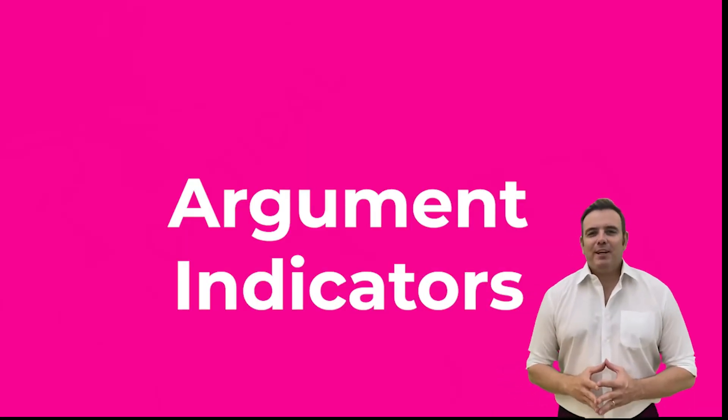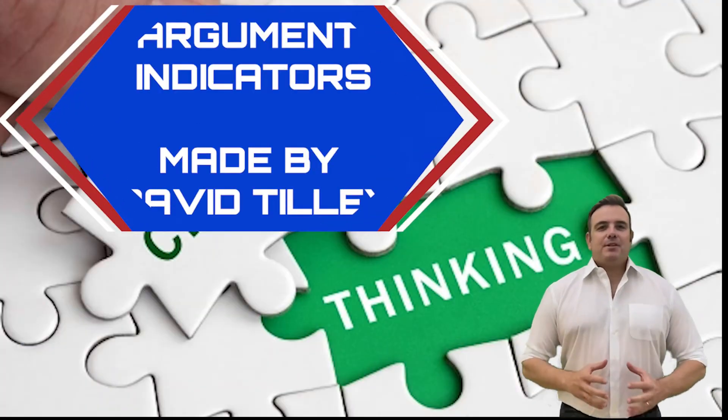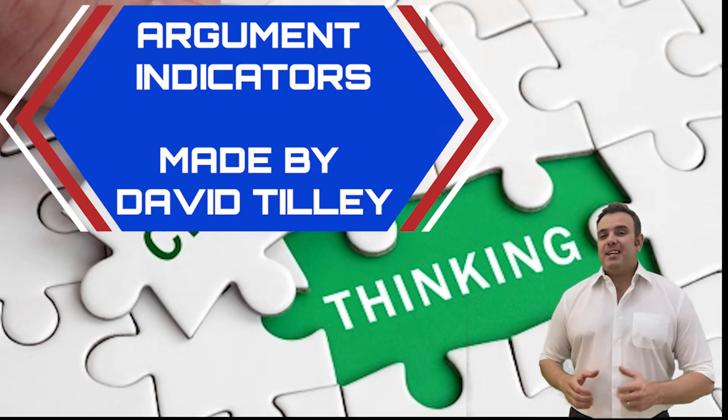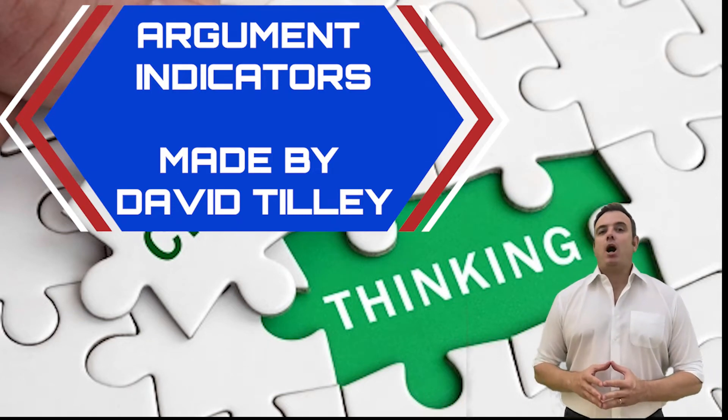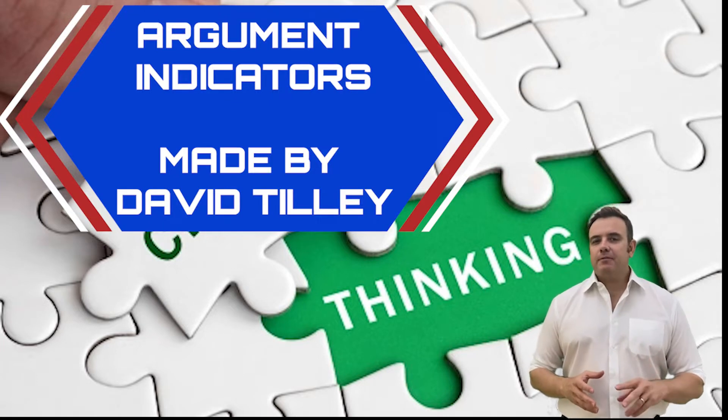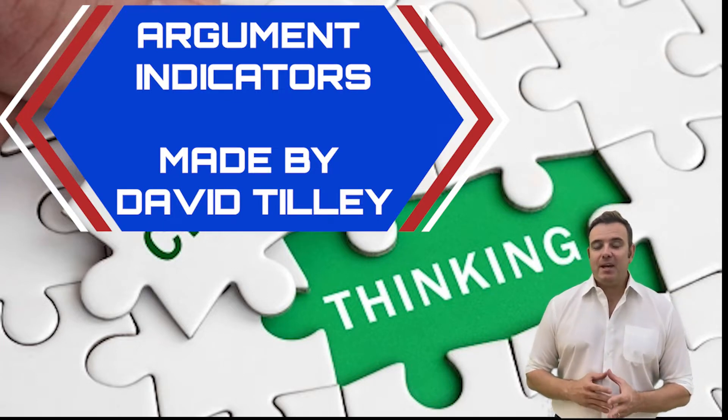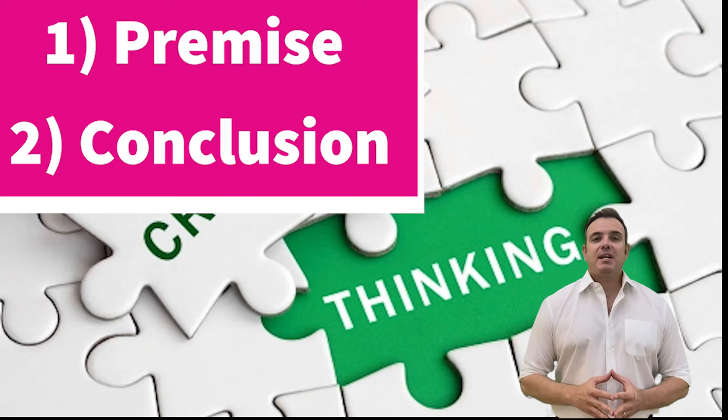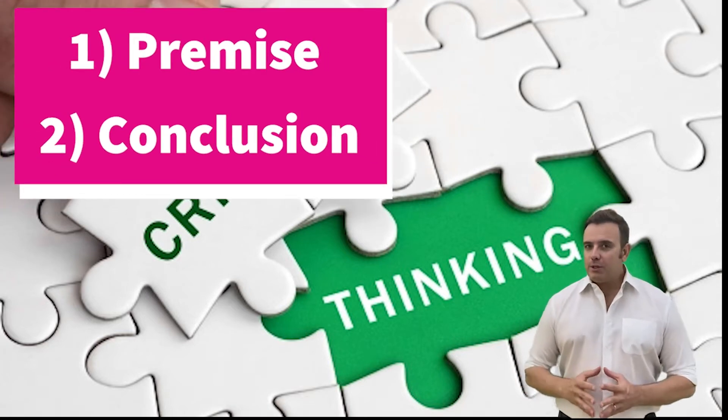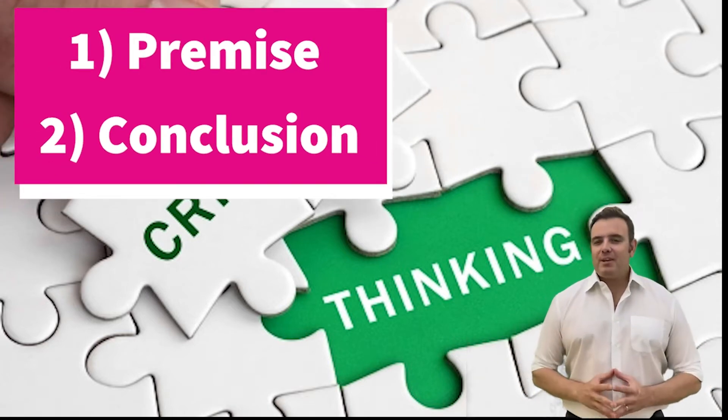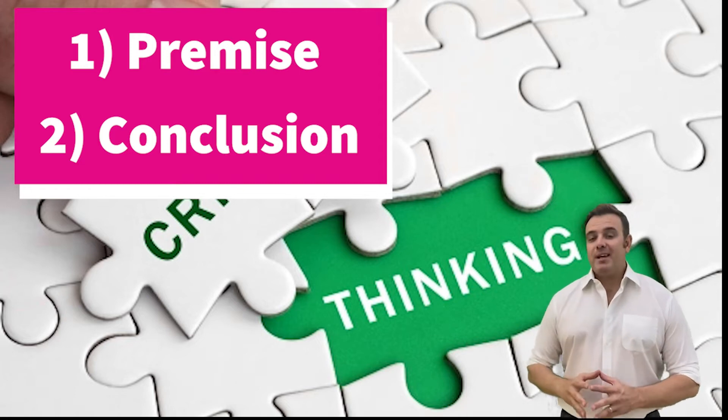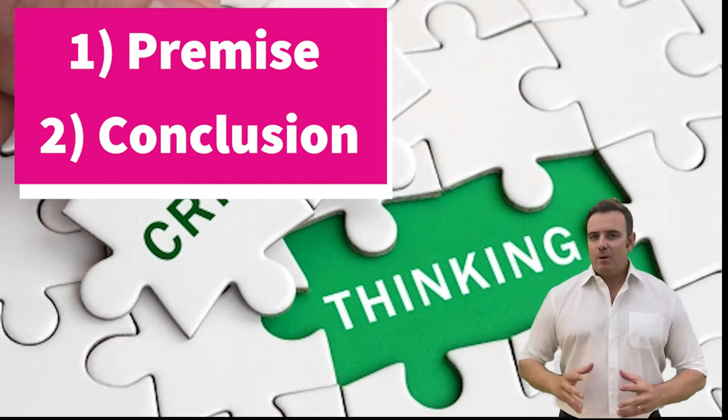Hello guys, great to see you all again. Hope you're keeping awesome. Today we're going to be looking at indicators in an argument. So there are always two, and the first one is a premise, and the second is a conclusion. So we're going to be looking at these two today. Premise and conclusions in an argument.